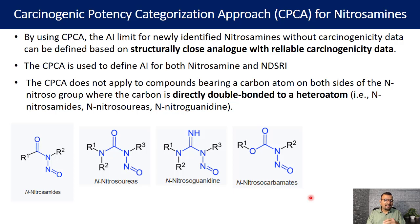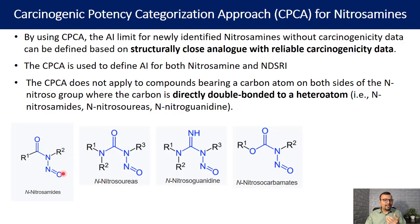Let us understand the examples. The first example is N-nitrosoamides. A heteroatom is present — it could be oxygen, nitrogen, sulfur, or phosphorus — and it must be directly double bonded to a carbon. The alpha carbon in N-nitrosoamides has oxygen double bonded to it, and since oxygen is a heteroatom, N-nitrosoamide is excluded from this particular categorization approach.